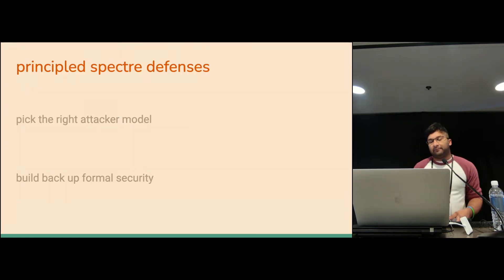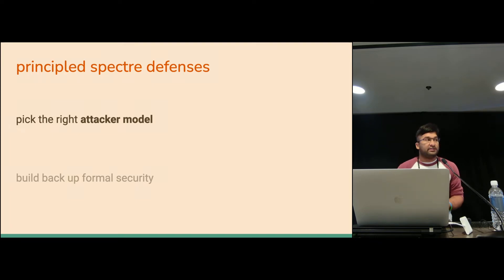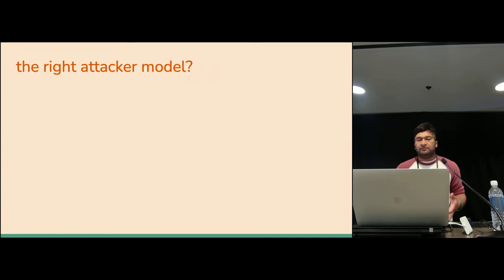To be able to do that, you need to make sure you are picking the right attacker model for the kinds of programs that you're trying to protect. Once you have that attacker model, we can start using that as a guide to build back up to the security properties that we lost because of speculative execution. And this first step, picking the right attacker model, is kind of non-trivial.